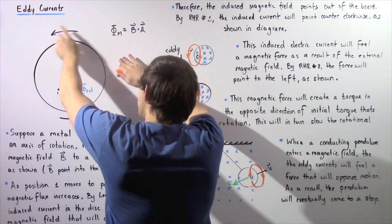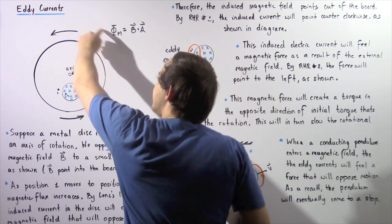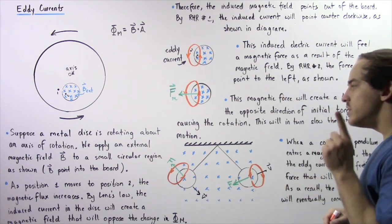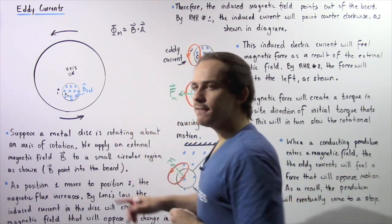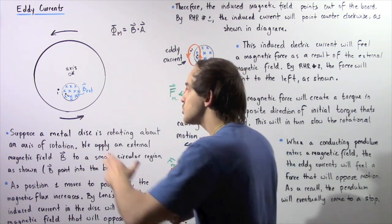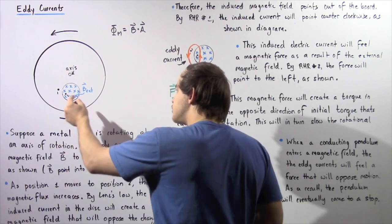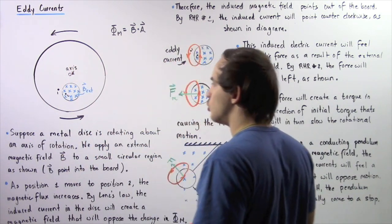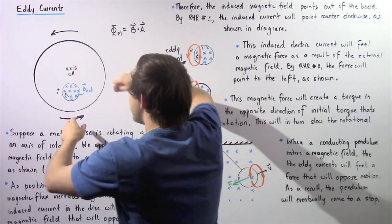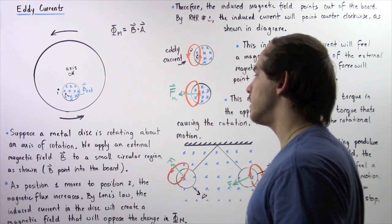Let's suppose we have a metal disc that is rotating about an axis of rotation in a counterclockwise direction, as shown by the following two arrows. We apply an external magnetic field B to a small circular region of space. This external magnetic field is uniform and points into the board, as shown by the following blue arrows. Essentially, as our disc is rotating, it's rotating through this region that has a uniform external magnetic field.